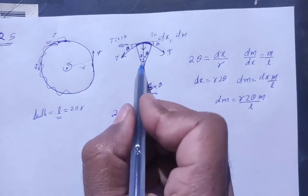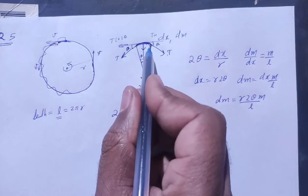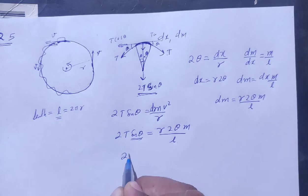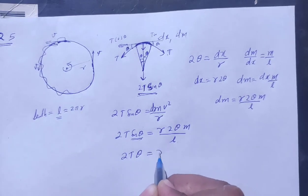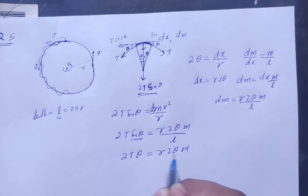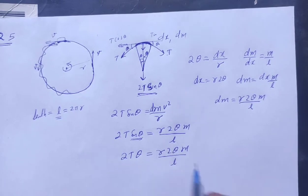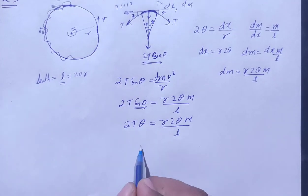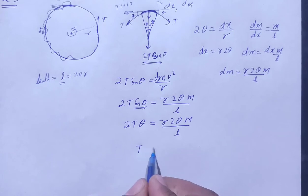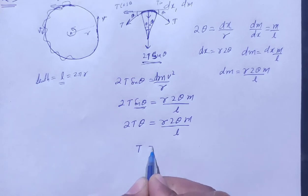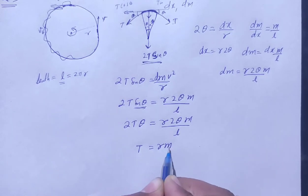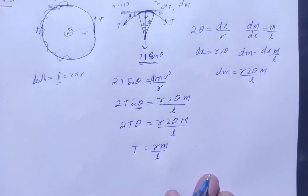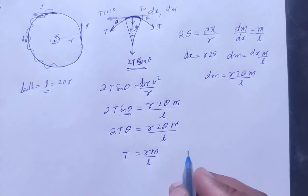For a small angle, sinθ ≈ θ. So the 2 and θ cancel on both sides, giving tension T equals r·m·v²/(r·l). The r cancels, so tension T equals m·v²/l. This is our tension.